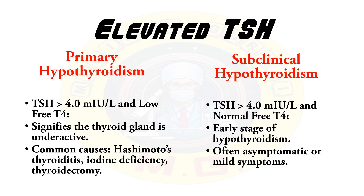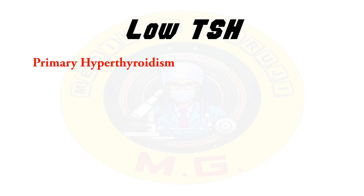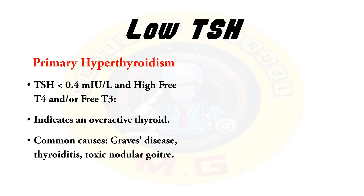Low TSH levels can be found in primary hyperthyroidism, where TSH value is less than 0.4 milli-international units per litre, and free T4 or free T3, or both, are high. It indicates an overactive thyroid. Common causes include Graves' disease, thyroiditis, and toxic nodular goiter.